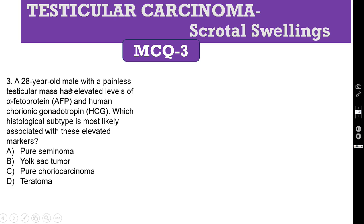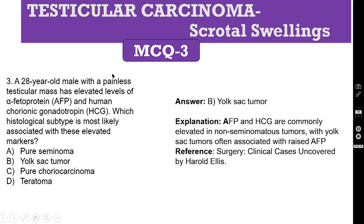MCQ 3. A 28-year-old male with a painless testicular mass has elevated levels of alpha-fetoprotein (AFP) and human chorionic gonadotrophin (HCG). Which histological subtype is most likely associated with these elevated markers? Both AFP and HCG are elevated in non-seminomatous tumors, with yolk sac tumors often associated with raised AFP.